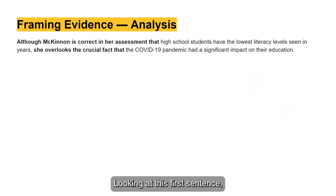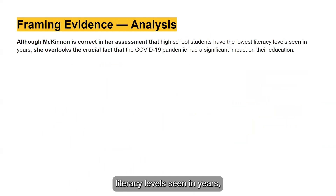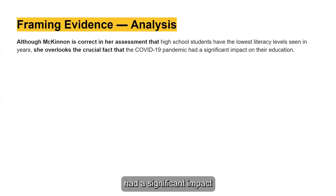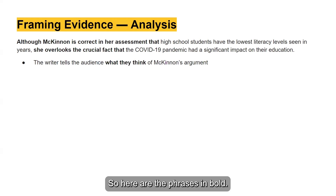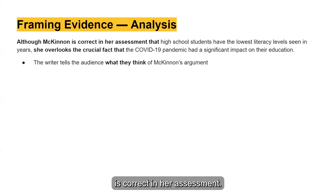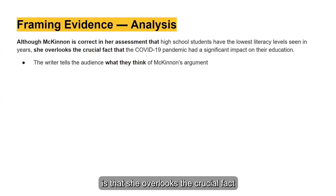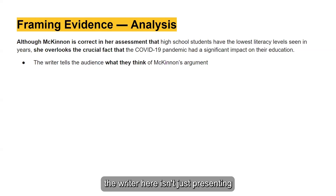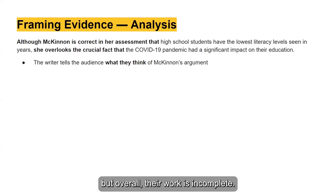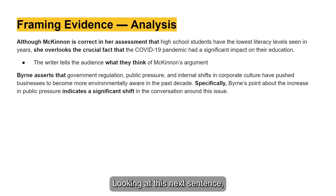Looking at this first sentence: "Although McKinnon is correct in her assessment that high school students have the lowest literacy levels seen in years, she overlooks the crucial fact that the COVID-19 pandemic had a significant impact on their education." The phrases in bold show the audience what the writer thinks of McKinnon's argument — that her findings are correct, but that her work is overall incomplete because she overlooks a crucial fact.